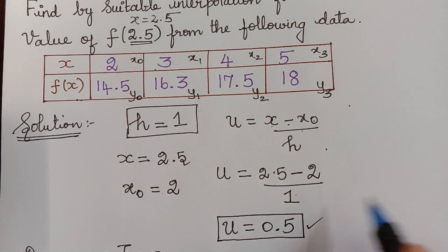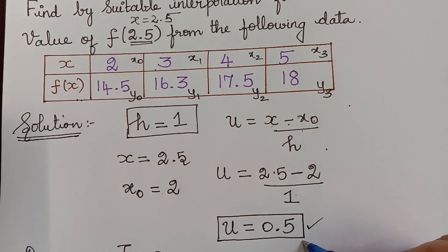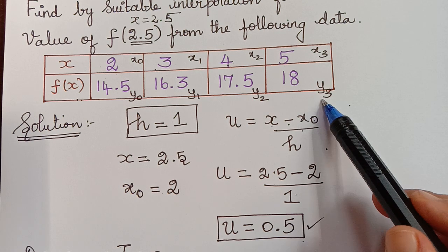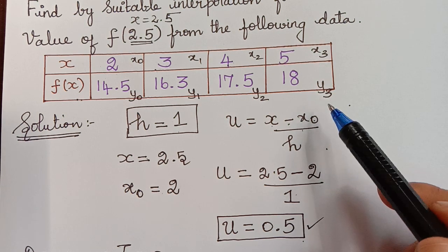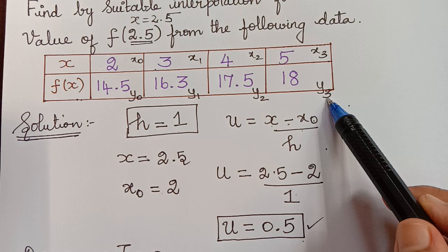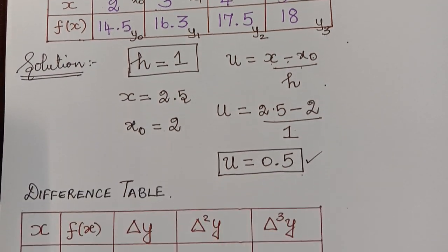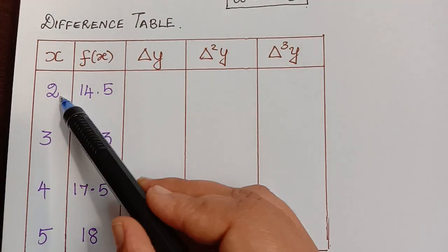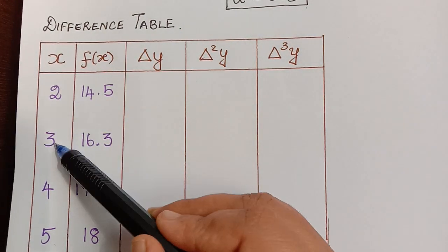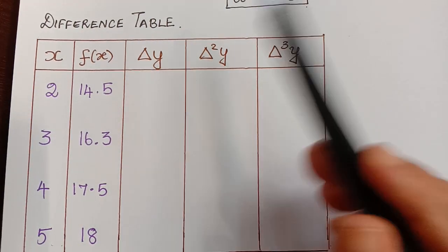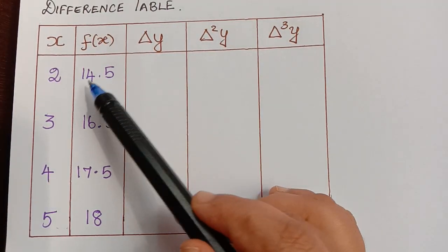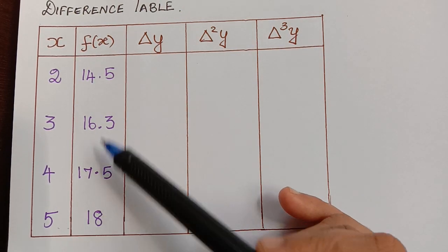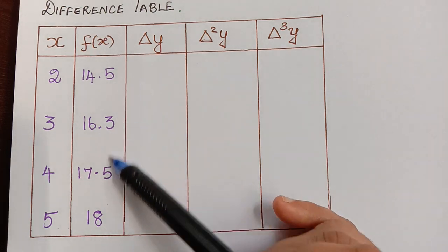After finding u, we have to form the difference table. We have data until y3, so the difference table has to go until delta cube of y. I have already drawn the table with x values 2, 3, 4, 5 and the corresponding y values — that is f of x — which are 14.5, 16.3, 17.5, and 18.